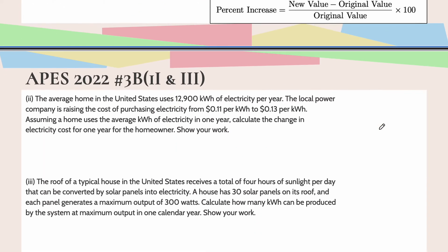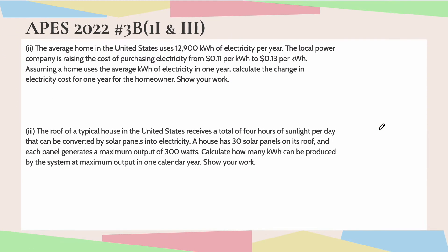Moving on to part two. The average home in the U.S. uses 12,900 kilowatt hours of electricity per year. The local power company is raising the cost of purchasing electricity from 11 cents per kilowatt hour to 13 cents per kilowatt hour. Assuming a home uses the average kilowatt hours of electricity in one year, calculate the change in electricity cost for one year for the homeowner. Show your work.